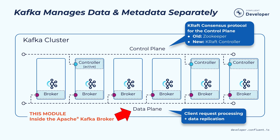Within the Kafka cluster, we have a separate control plane and the data plane. The control plane is responsible for handling all the metadata of the cluster, and the data plane is used to handle all the actual data. In this particular module, I'm going to talk about how the data plane is used to handle all the client requests.